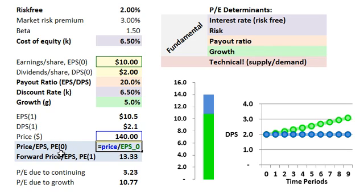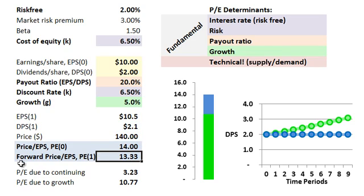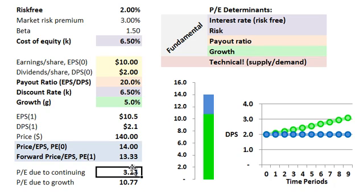I've denoted it here as P/E₀ to emphasize that it's the P/E against current earnings. When looking at P/E ratios, you want to be very careful about what kind of denominator or earnings base you're using — not just the definition, but which period. For example, if I take the same price of $140 and instead divide it by forward earnings, one period forward, I have the same numerator but a higher denominator. That gives what we'd call a forward P/E of 13.33, which is necessarily lower when earnings per share is growing.